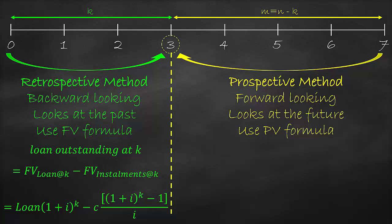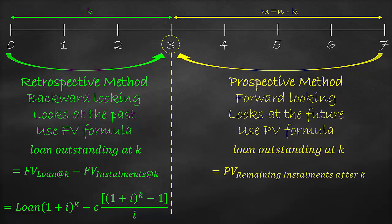The prospective method formula is the present value of unpaid installments. We use the present value of ordinary annuities because there are future equivalent unpaid installments. Our formula is: the present value of the remaining unpaid installments equals the periodic installments multiplied by [1 - (1 + interest rate) to the power of negative (number of total periods minus number of paid periods)], all divided by the interest rate.